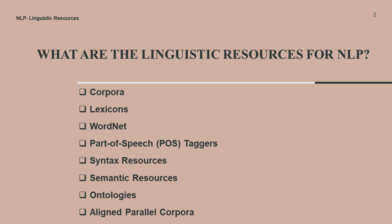In information systems, WordNet is used for various purposes like semantic similarity, word sense disambiguation, information retrieval, automatic text classification, and machine translation. It is a part of the NLTK corpus. One of the most important uses of WordNet is to find out the similarity among words.